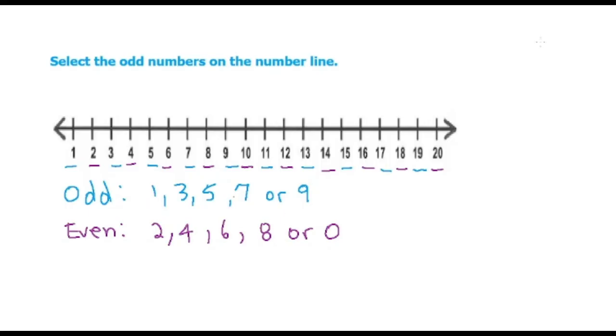So to identify them, we underline them, but we can also circle them. And if you notice, every other number is an odd number.